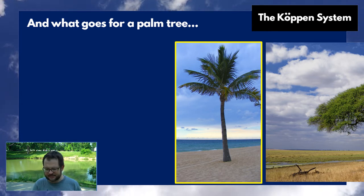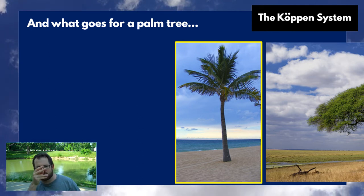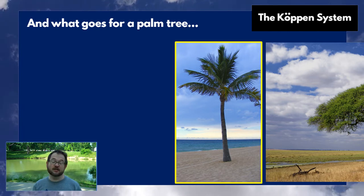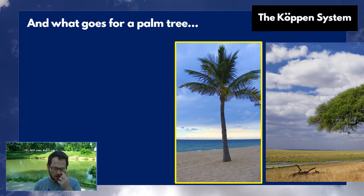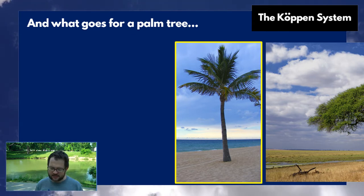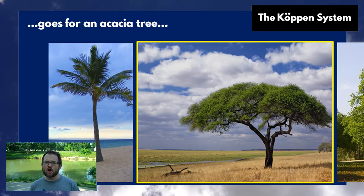Palm trees live in places that get a certain amount of rain — not more and not less. There aren't palm trees in the middle of the jungle, and there aren't palm trees in the middle of the desert. It tells you something about temperature too — it clearly doesn't freeze there, because palm trees can't survive freezing. Just seeing that palm trees live there tells you quite a lot about what the climate of a region is.